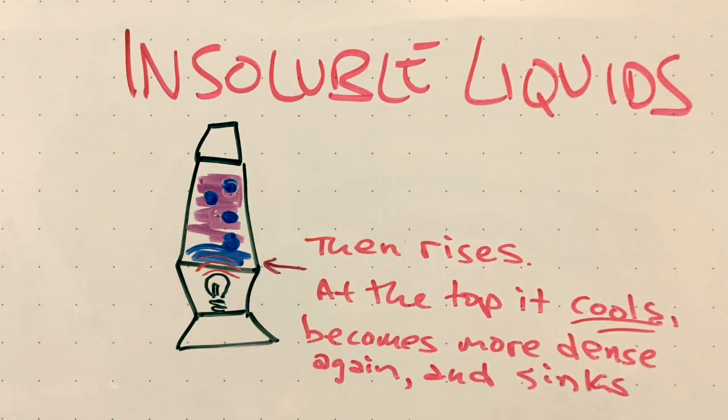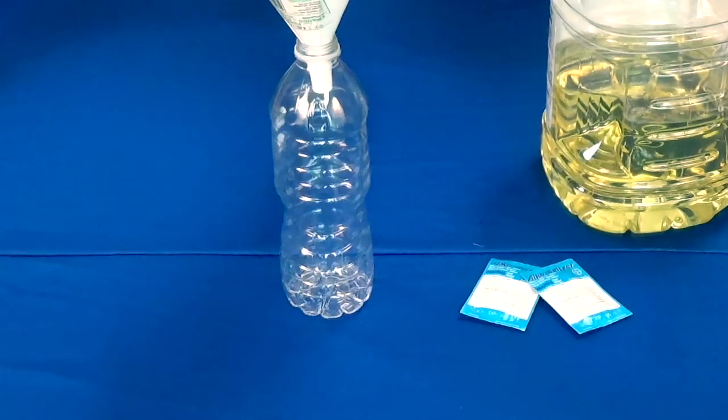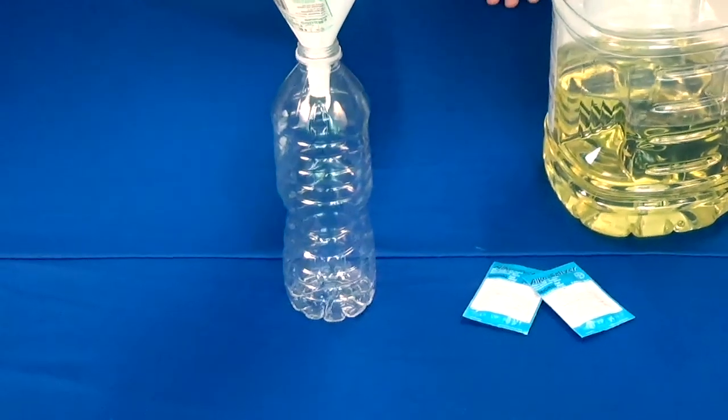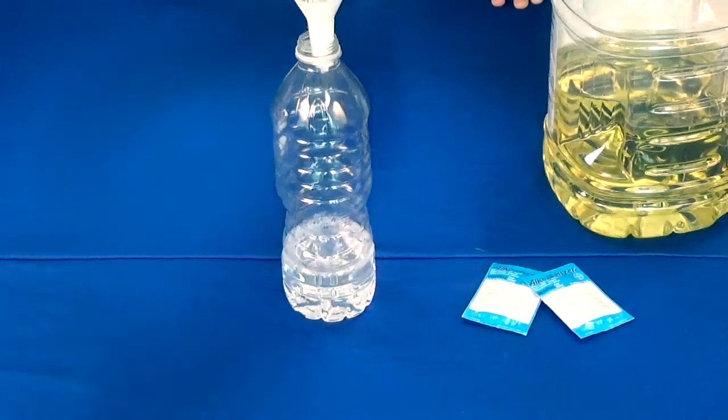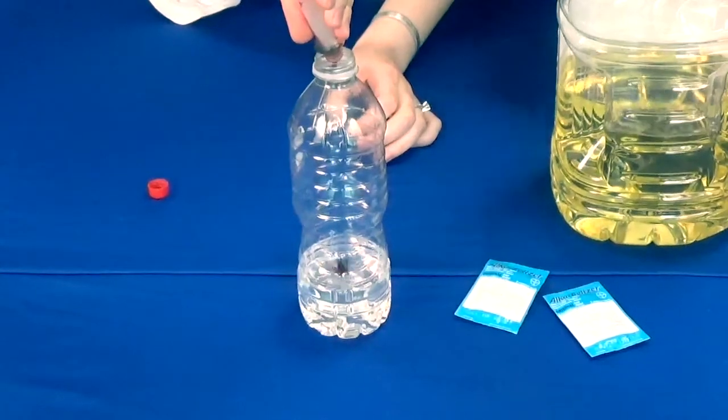To begin making your lava lamp, fill the bottle one quarter of the way with water. Mix in food coloring to your desired color.